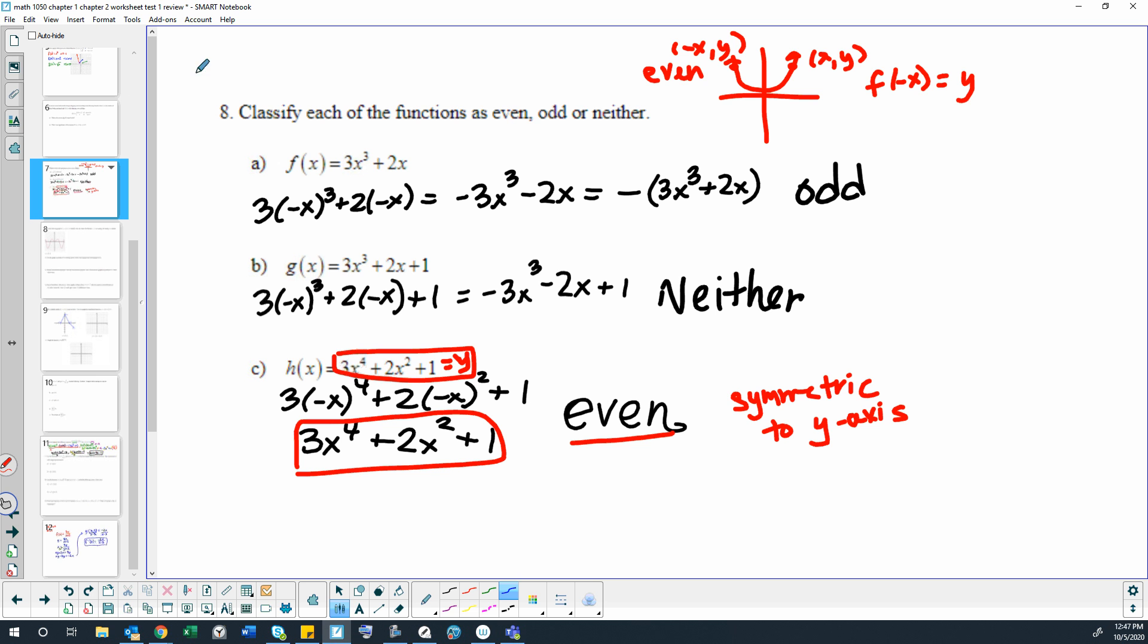Okay, well, when a function is odd, that means—let me just do a little picture over here—that it has symmetry to the origin. So if we have a point at (x,y), then we have a matching point across the origin at (-x,-y).